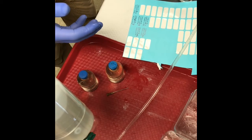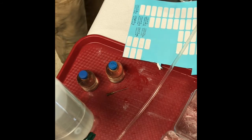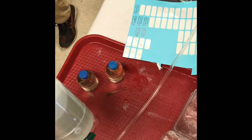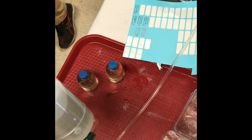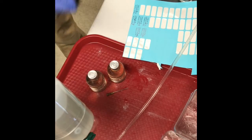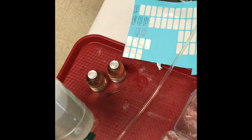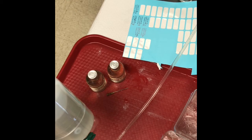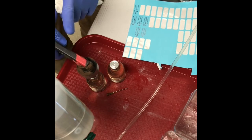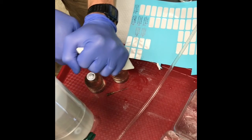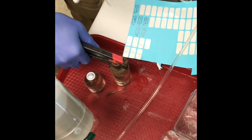If we want to keep them secure, we can also add a crimp cap lid. We'll just put the lid on top, use the crimper to push down first, and then it won't accidentally come off during storage.